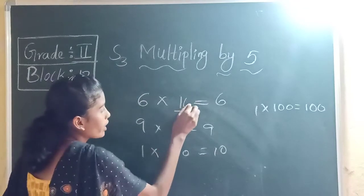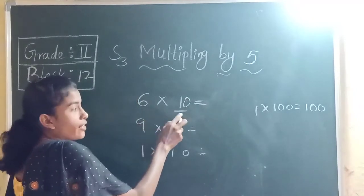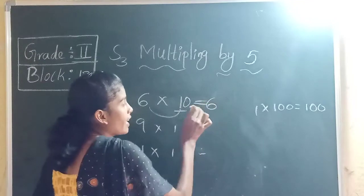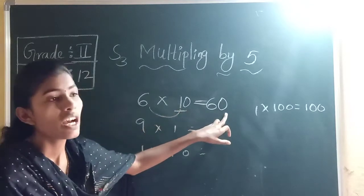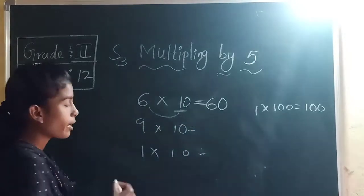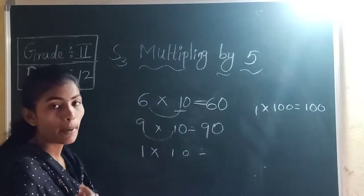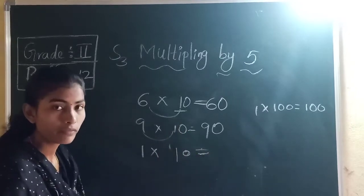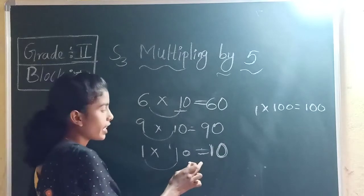Now if you multiply a number with 10 — for example, 6 into 10 — first multiply the non-zero digits. How many zeros are there in 10? One zero. So add that zero. For example, 1 into 10: 1 ones are 1, add 0, equals 10. Similarly, 9 into 10: 9 ones are 9, add 0, equals 90.